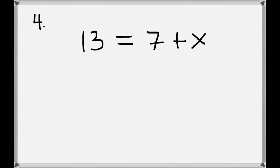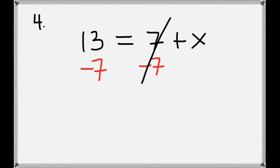For the fourth problem we have 13 equals 7 plus x. We'll subtract 7 from the right hand side to get x by itself, and then we have to subtract it from the left hand side as well. The 7's will cancel, so that just leaves us x on the right hand side.